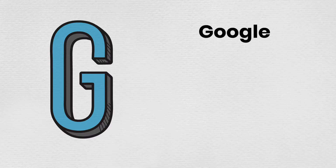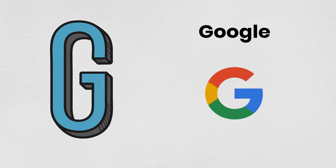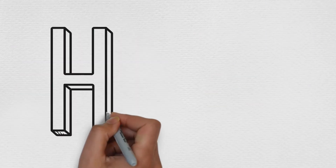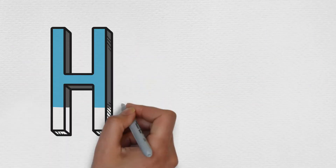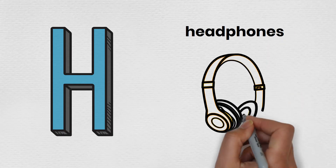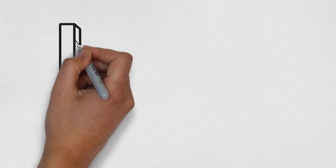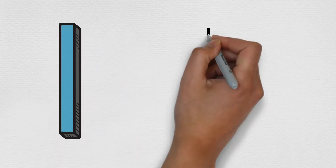G is for Google. H is for headphones. I is for iPad.